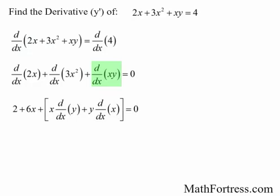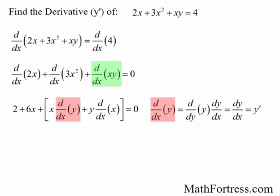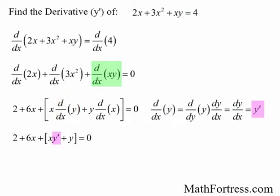Applying the product rule, with f(x) being x and g(x) being y, we have that the derivative of the expression is going to be x times the derivative of y plus y times the derivative of x. In order to take the derivative of y, we need to apply the chain rule. The derivative of y is going to be equal to the derivative of y times dy/dx. The derivative of y is just 1, so we just end up with dy/dx, which is the same thing as y prime. And the derivative of x is just 1. The derivative of a constant is just 0.